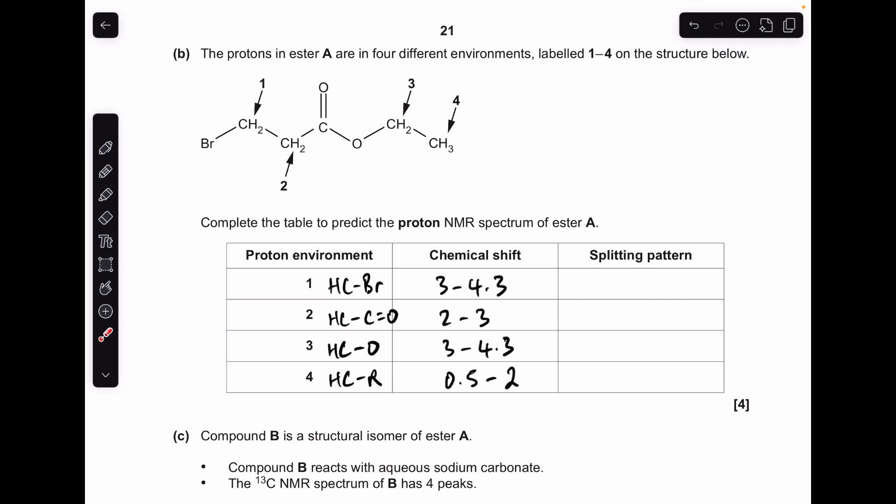There's the shift ranges there, so let's talk about splitting patterns now. Environment one, these two protons here, are adjacent to another two in a different environment, so they're going to get split, and we use the N plus 1 rule of course. If you've got two adjacent protons, you're going to see three lines, so we're going to see a triplet for one. Environment two, well they're adjacent to environment one, which is another CH2 group, so you're going to get another triplet there. Environment three is another CH2 group, but it's next to a CH3 group. So we're going to get four lines, a quartet. And finally, environment four, next to two, so we're going to see another triplet.